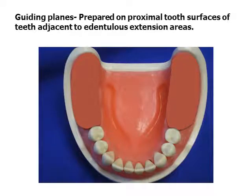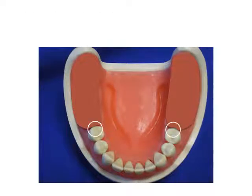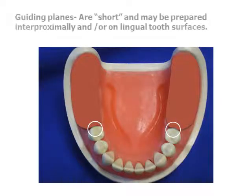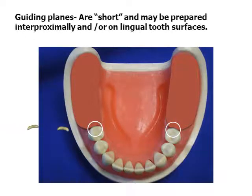Guiding planes are parallel proximal surfaces which establish a reproducible path of insertion. They are most conveniently placed on the tooth surface adjacent to the edentulous area. Guiding planes for the Kennedy Class 1 partial denture are short, or about one third of the occlusal-gingival length of the tooth.